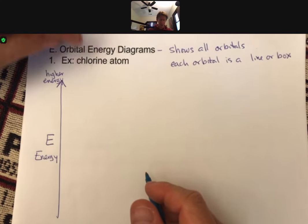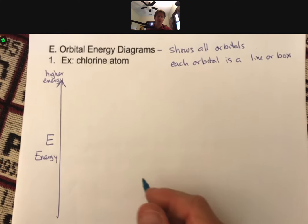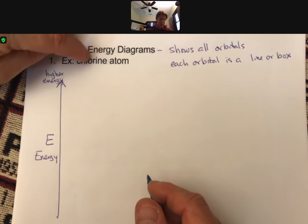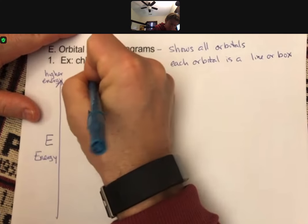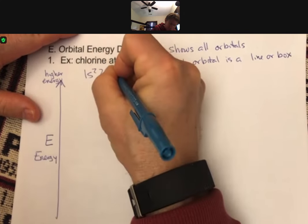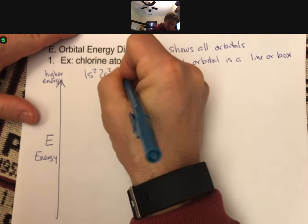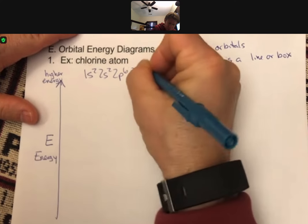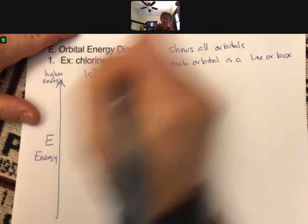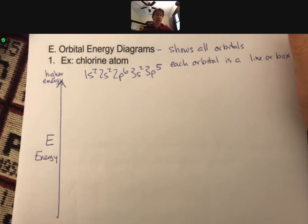And before I do an orbital energy diagram, what I usually do is I usually do the electron configuration first. And we've done this already, so I'll go fairly quickly here. 1s² 2s² 2p⁶ 3s² 3p⁵. So that's the same result we got before. And here's what the orbital energy diagram does.